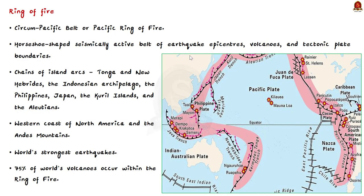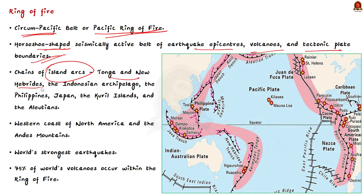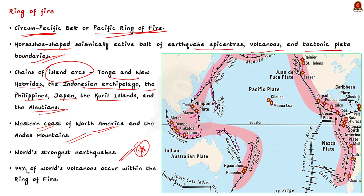The Ring of Fire, also called the Circum-Pacific Belt or Pacific Ring of Fire, is a long, horseshoe-shaped, seismically active belt of earthquake epicenters, volcanoes and tectonic plate boundaries that fringes the Pacific basin. For much of its 40,000-kilometer length, the belt follows chains of island arcs such as Tonga and New Hebrides, the Indonesian archipelago, the Philippines, Japan and Kuril Islands and the Aleutians, as well as the western coast of North America and the Andes Mountains. Volcanoes are associated with the belt throughout its length — that is why it is called the Ring of Fire. 75% of the world's volcanoes occur within the Ring of Fire.